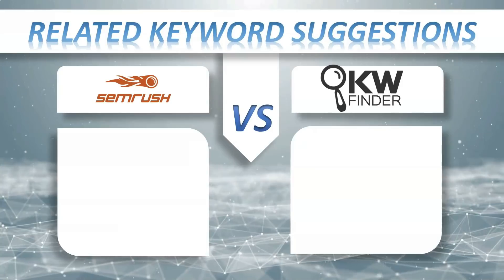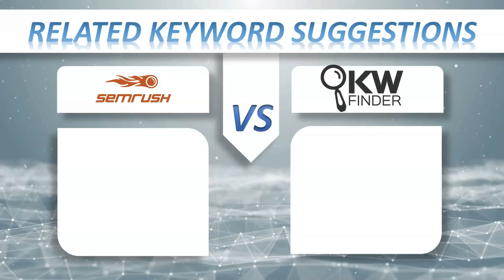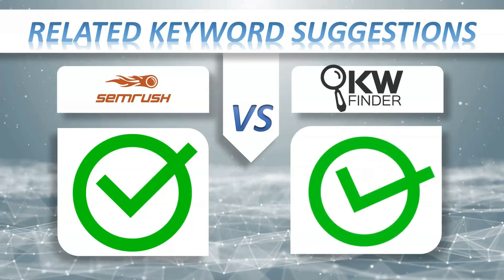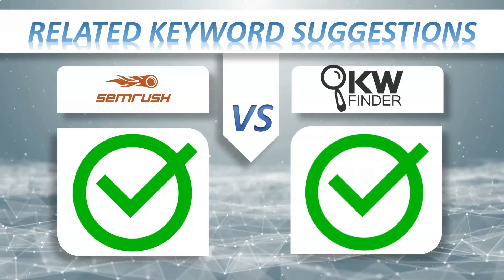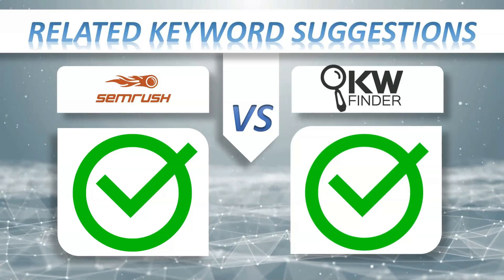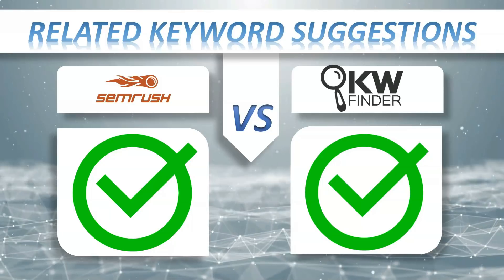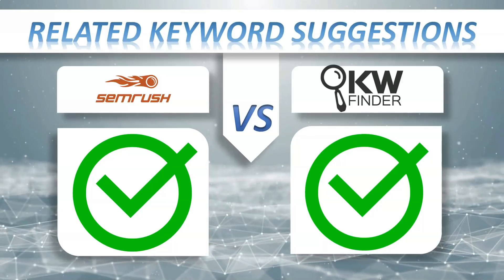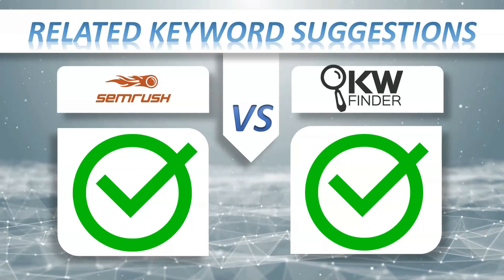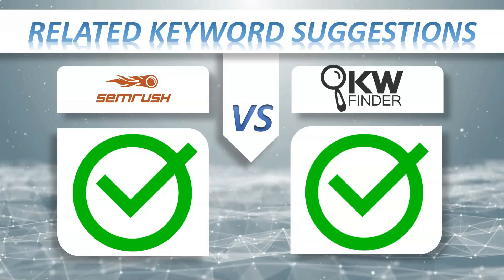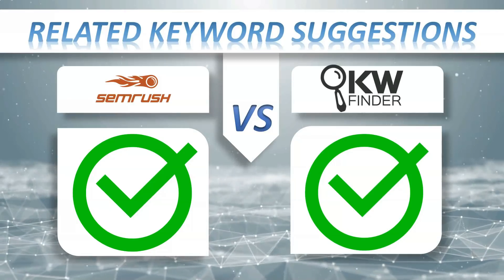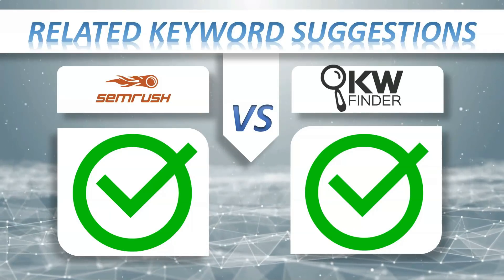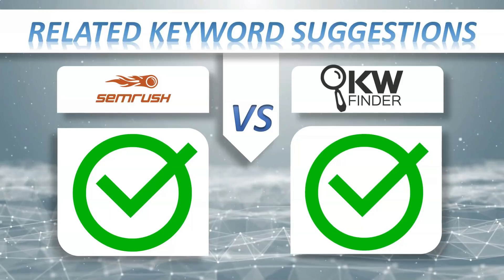Related keyword suggestions: SEMrush yes, KWFinder yes. The easiest way to reach clients is to find out what your potential customers or readers are searching for on Google and create content on your website around these topics. Imagine how your business would benefit if you could analyze search trends on Google, find search terms related to your business domain, and customize content on your website to serve the actual needs of your customers.